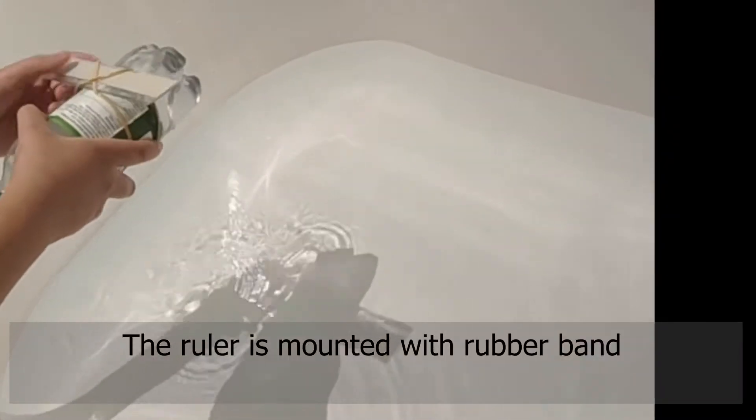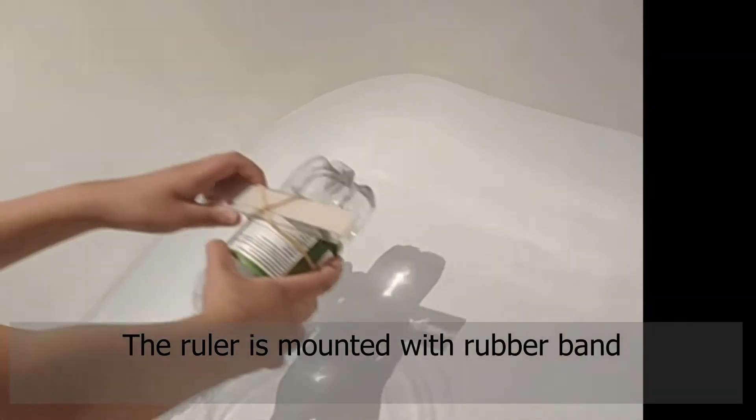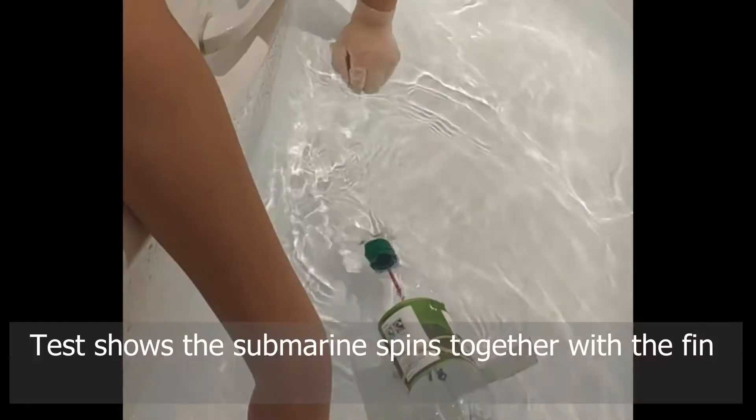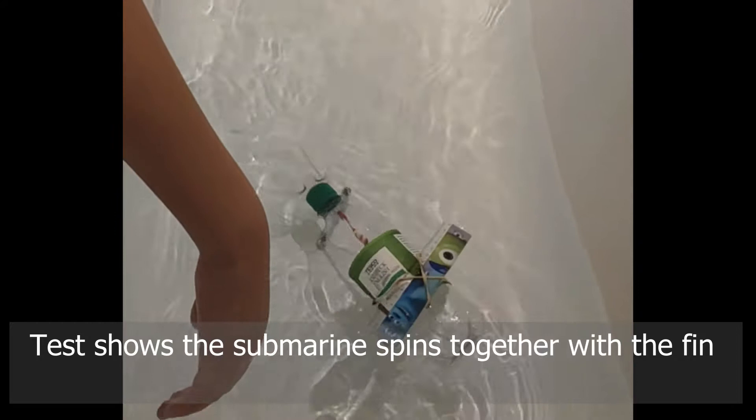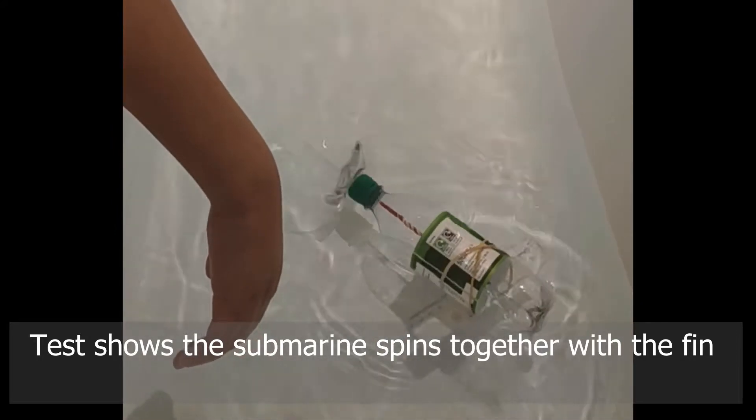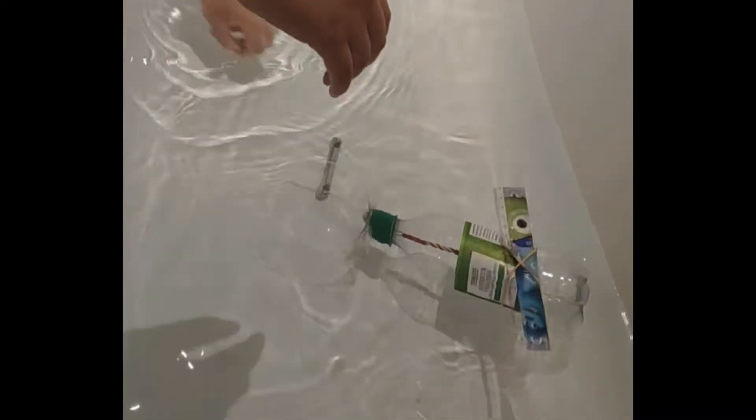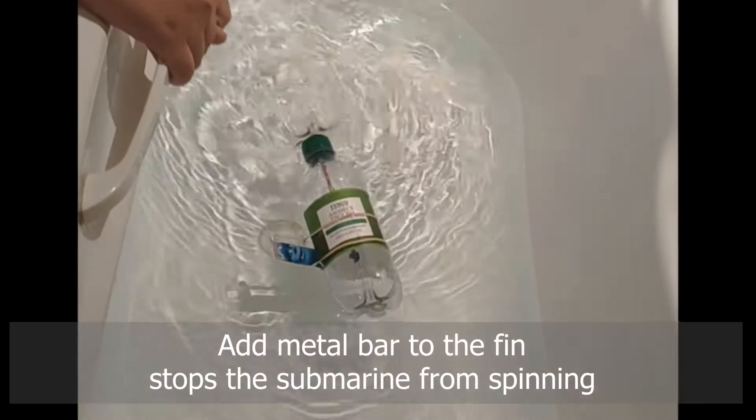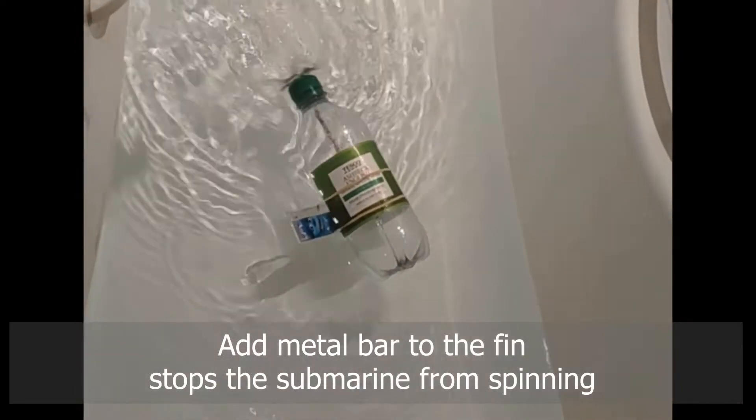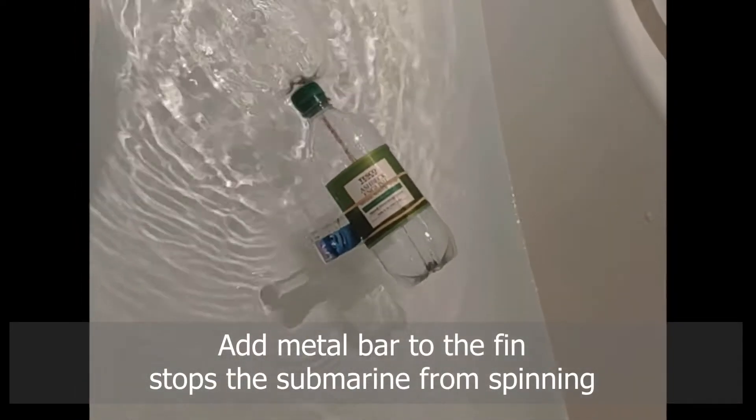The balloon is mounted with the rubber band. Test shows the submarine spins together with the fin. Add the metal bar to the fin stops the submarine from spinning.